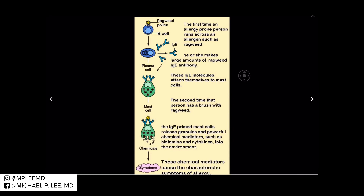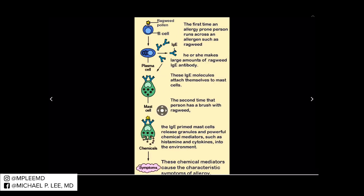What does the mast cell do in tissue? The thing we're going to talk about today is the allergic response. Here you can see ragweed pollen — it attaches to a cell on first encounter, then your plasma cells produce IgE, which is an antibody that binds to the surface of the mast cell. The next time you're exposed to the antigen — in this case ragweed pollen — the mast cell degranulates and releases all those granules of histamine as well as heparin.